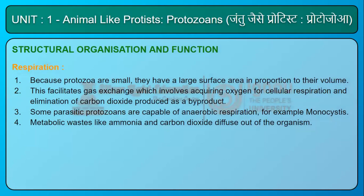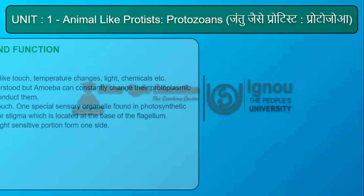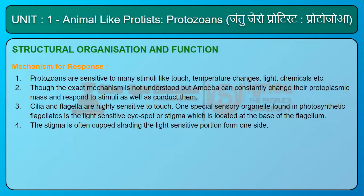Respiration: Because protozoa are small, they have a large surface area in proportion to their volume, which facilitates gas exchange — acquiring oxygen for cellular respiration and eliminating carbon dioxide as a by-product. Some parasitic protozoans are capable of anaerobic respiration, for example Monocystis. Metabolic wastes like ammonia and carbon dioxide diffuse out of the organism.